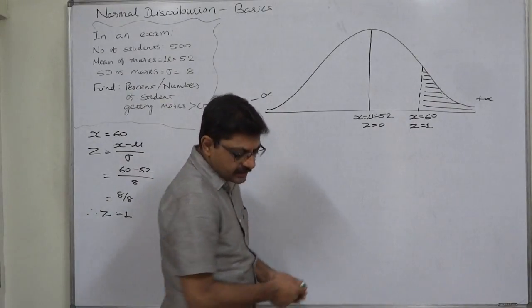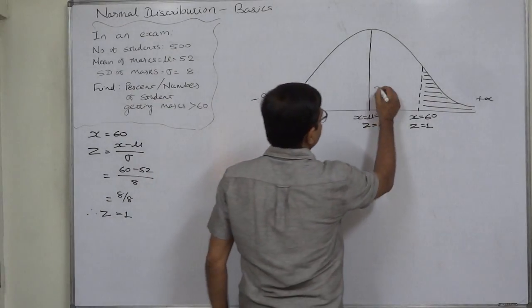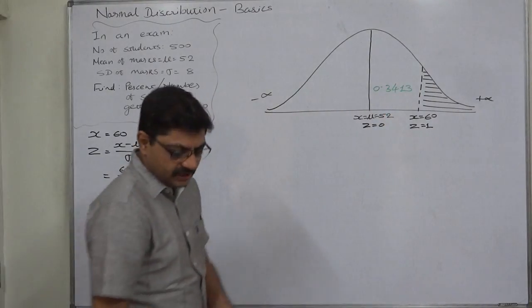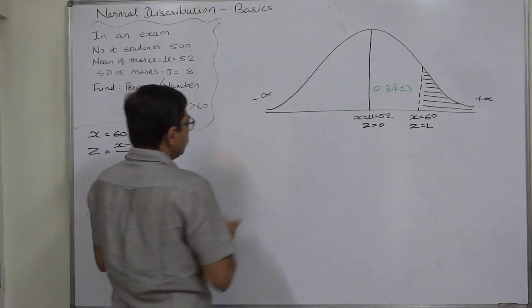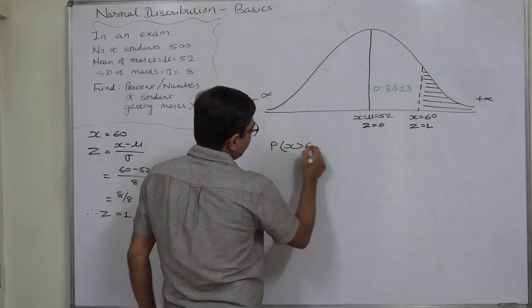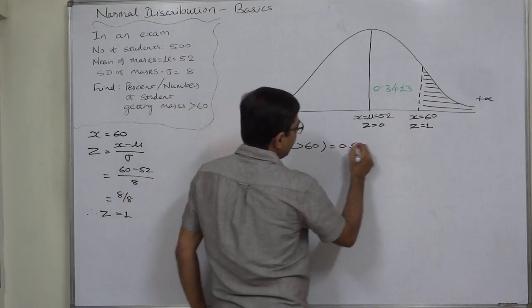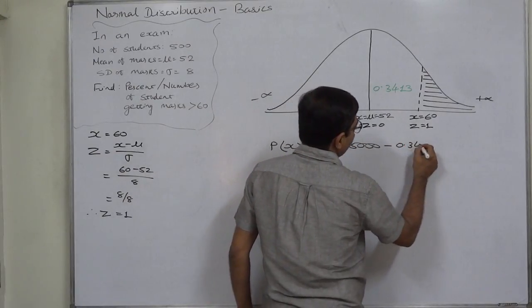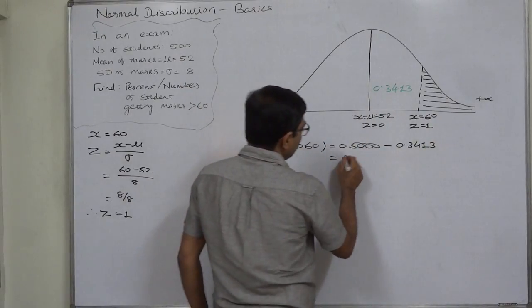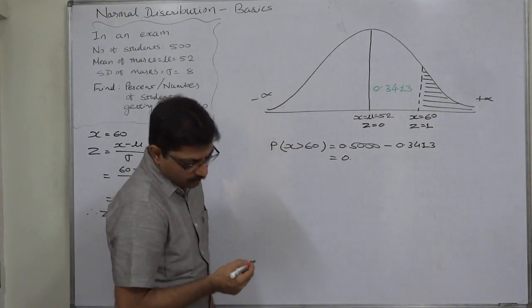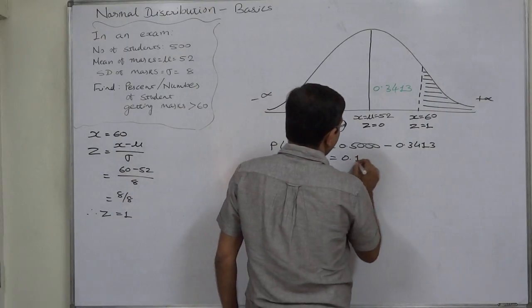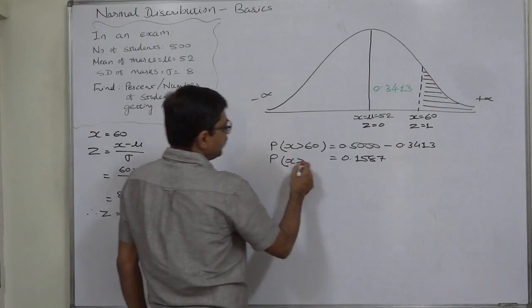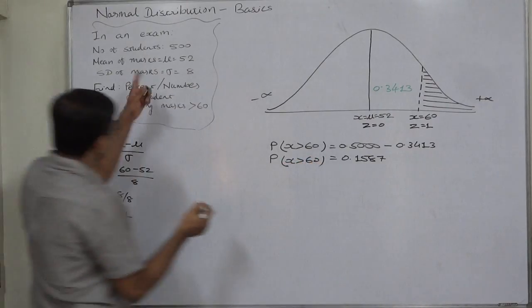The area between Z=0 and Z=1 is 0.3413, which is the region we are not interested in. So the probability of X greater than 60 equals 0.5 minus 0.3413, giving a remaining area of 0.1587. This is the probability of any student getting marks more than 60.